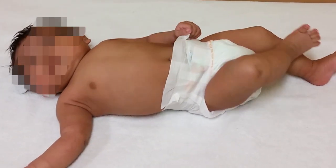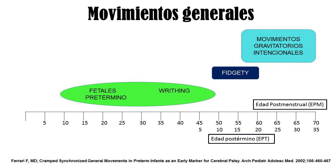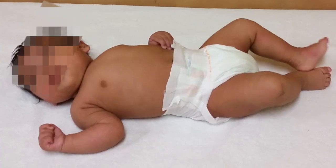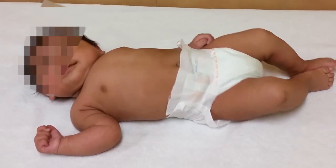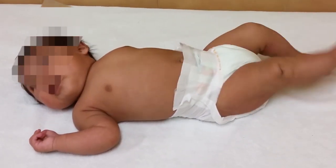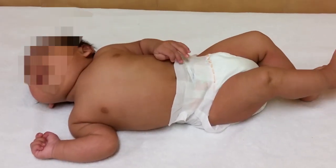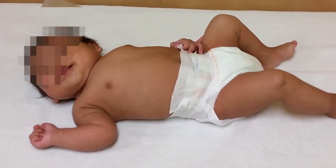These movement patterns are known as General Movements, or GMs, and were described by Prechtl in the middle of the last century. General movements consist of a series of gross movements of variable speed and amplitude involving all parts of the body, while lacking a distinctive sequence in the body segments involved. These movements are complex and occur frequently enough to be observed properly, involving the whole body in a variable sequence of movements of the arms, legs, neck, and trunk.